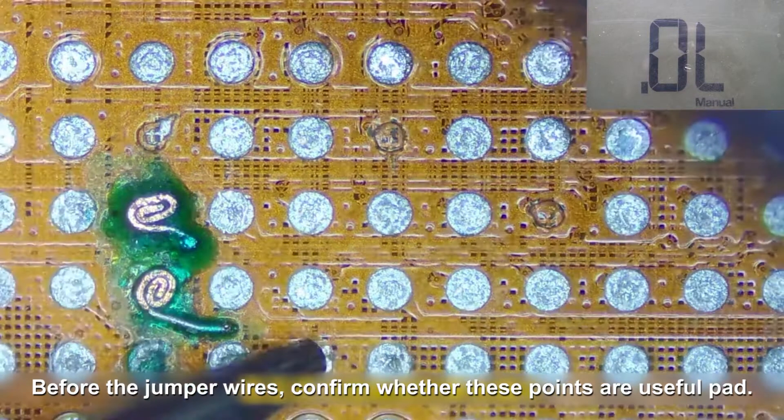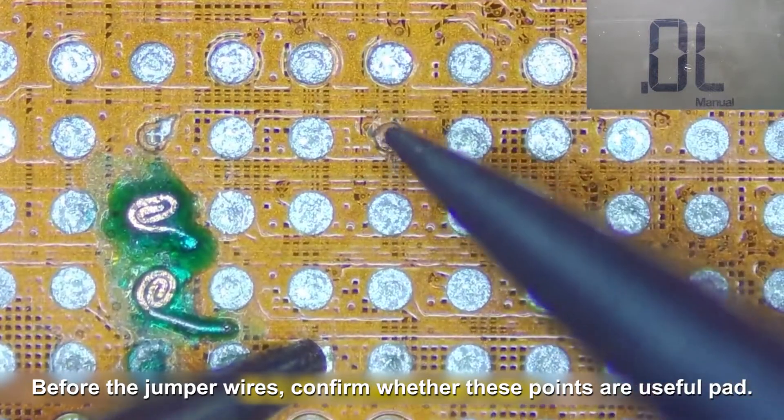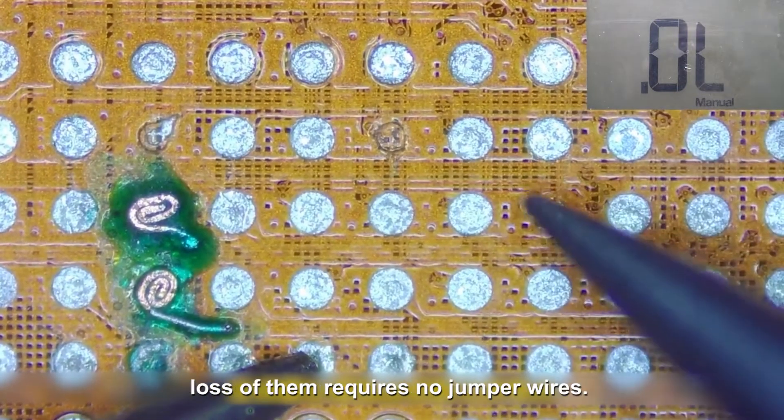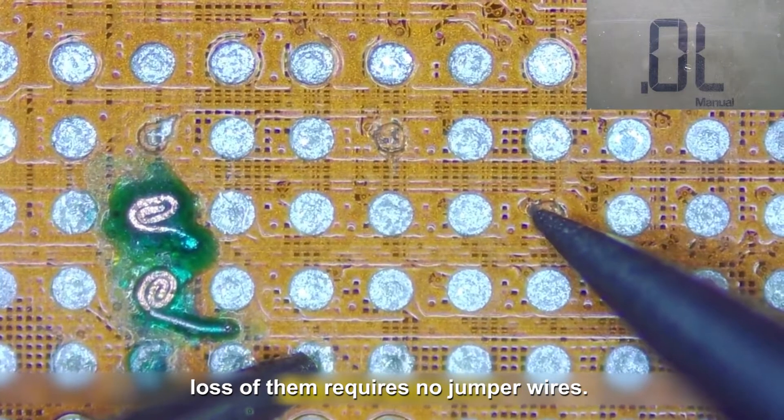Before the jumper wires, confirm whether these points are useful pads. Some pads are non-functional or grounding line, loss of them requires no jumper wires.